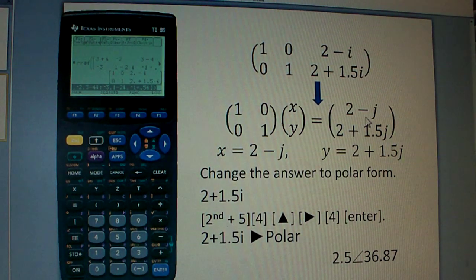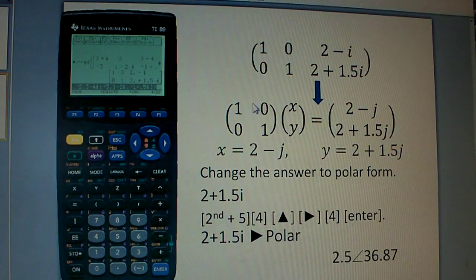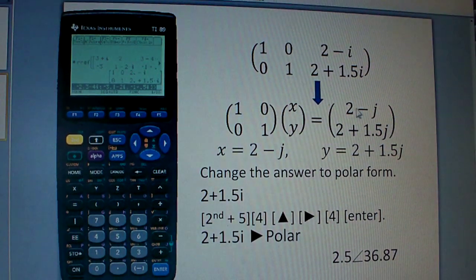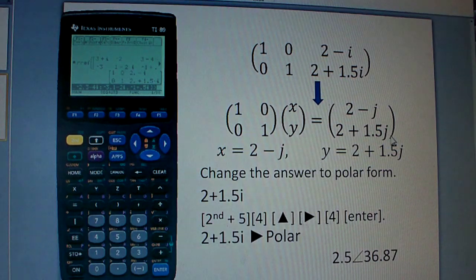Now, in the AX equal to B format, this means it's this matrix, the identity matrix times XY equals to 2 minus I, 2 plus 1.5 J.